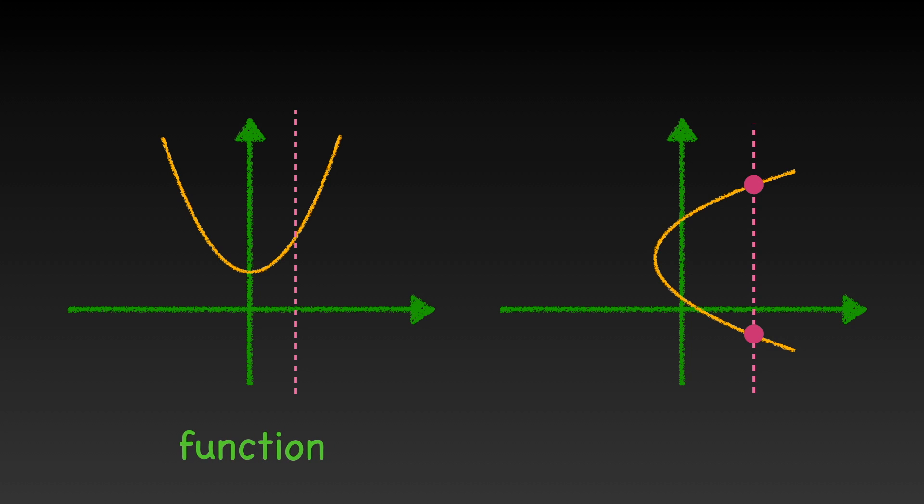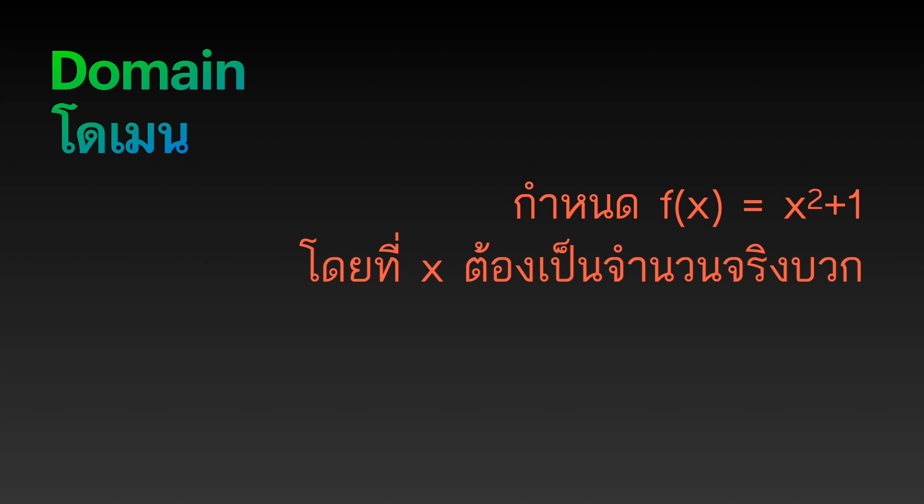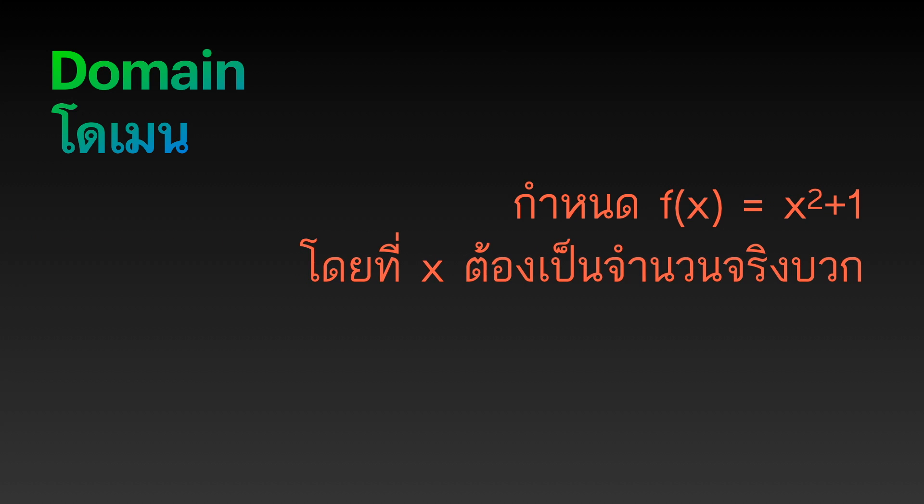The right question to ask is: what is the domain? Domain refers to the set of input values that we can put into the function. In the case of function, every time we write the function, we have to specify the domain. For example, we have f(x) equals x squared where x should be greater than or equal to 0. If we ask what is f(-2), we have to answer that f(-2) is not defined.